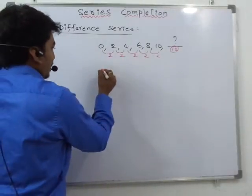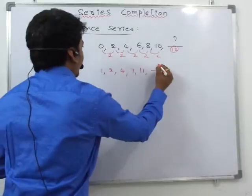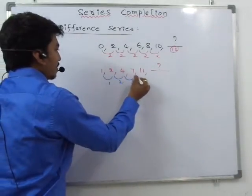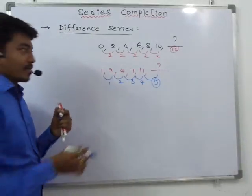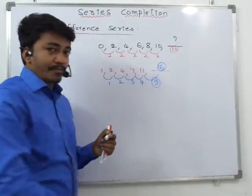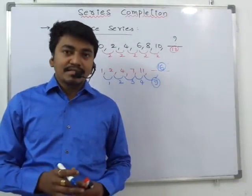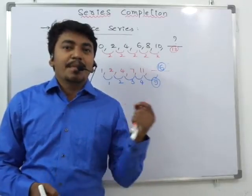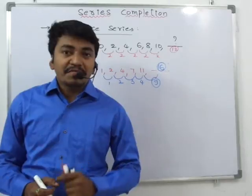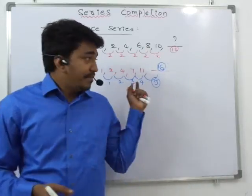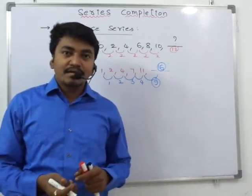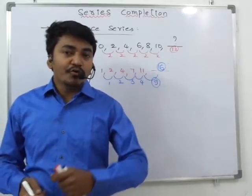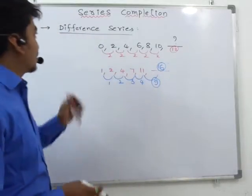Let's make it more difficult: 1, 2, 4, 7, 11 — what is the next number? The differences are 1, 2, 3, 4, so the next difference has to be 5. The missing number is 16. Similarly, you can expect difference series questions where the differences are squares, cubes, prime numbers, constants, or increasing/decreasing patterns. If you know how to frame a question, you can easily solve it.